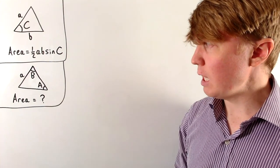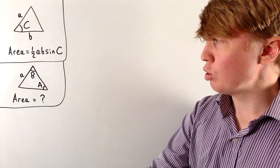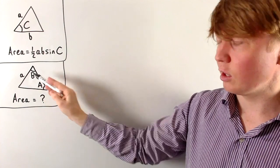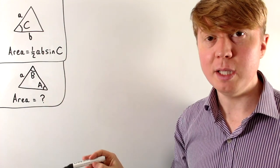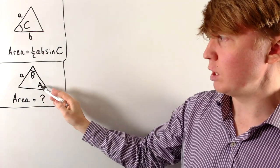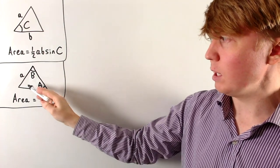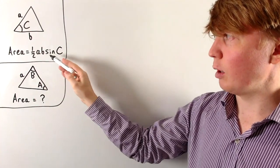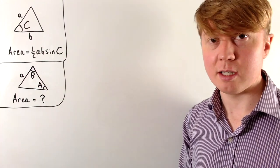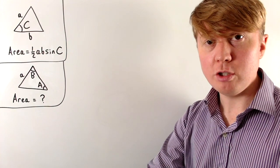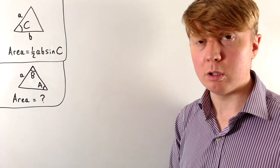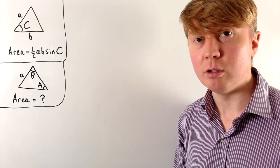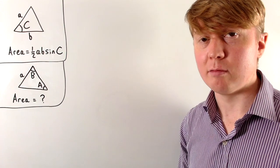Intuitively, we could use the sine rule to find the side length opposite angle B, then do 180 degrees minus A and B to find the remaining angle, and then just use a half AB sine C. But we'll do this in a more general way so that we can go straight to a formula rather than carrying out all these steps every time.